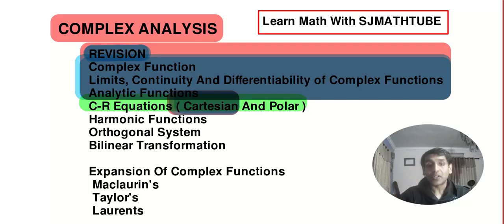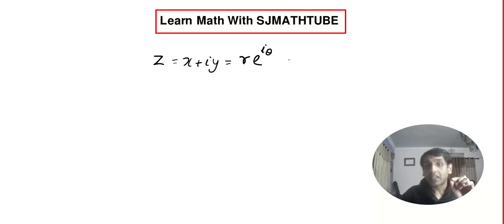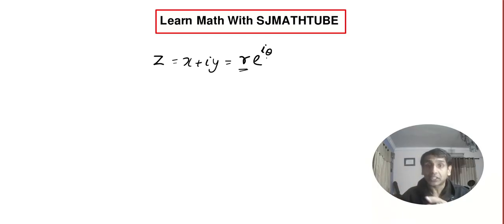In video number 1, when we did that revision in complex numbers, we learned that every complex number x plus iy in the Cartesian form can be converted into r·e^(iθ). We even learned a trick to find the values of r and theta really fast. We need that because soon we will be learning complex integration, and at that point such techniques are extremely important.